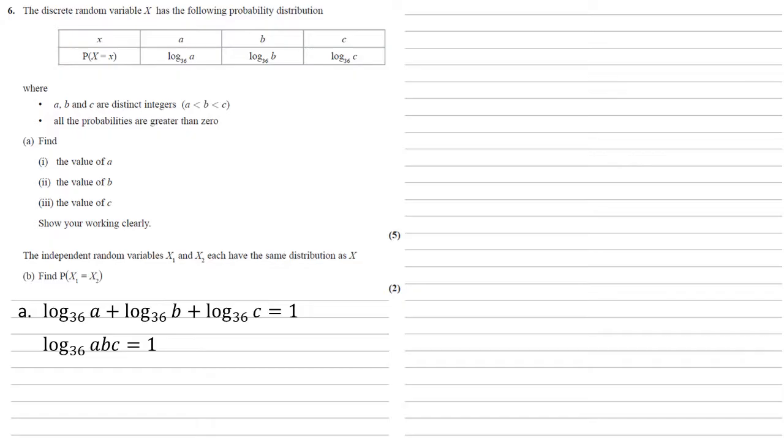If we think about what logs mean, all this is saying is that 36 to the power of one would give us ABC. So ABC must be equal to 36. This is just using our logarithms and what a logarithm means.